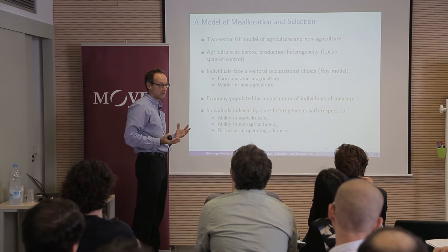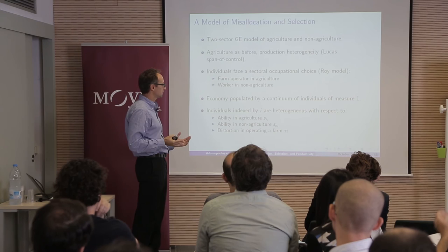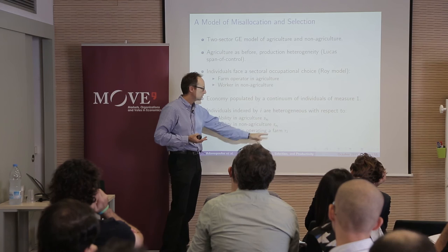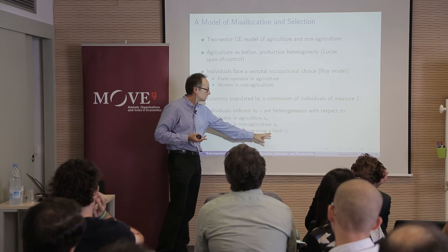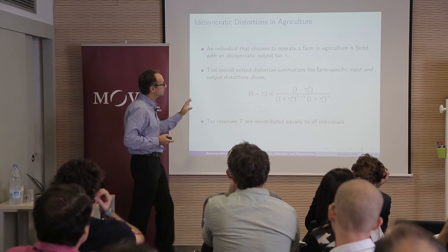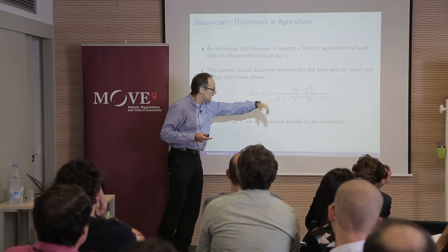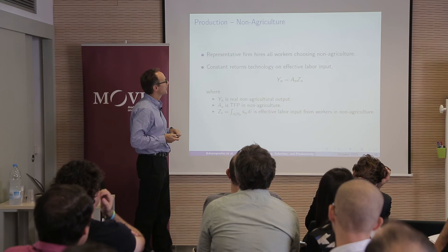Now I'll embed this into a two-sector ROY model. People are going to have ability in agriculture — that maps to my measures of productivity — and ability in non-agriculture. The key is that there are going to be distortions that affect the operation of farms. I'll use a measure that captures the overall distortion in agriculture, which includes capital, land, and village distortions, but model it as one. You can calculate incomes in agriculture and incomes in non-agriculture.